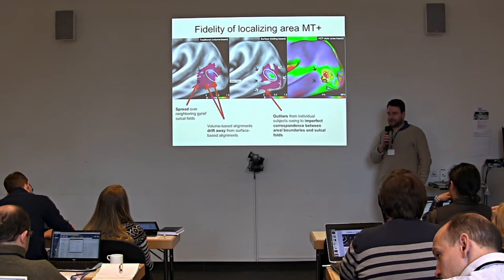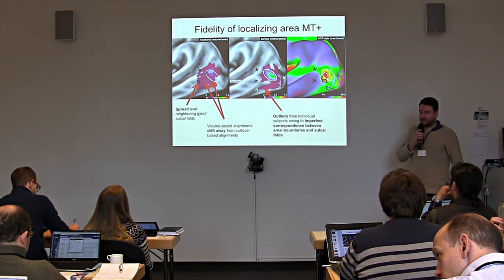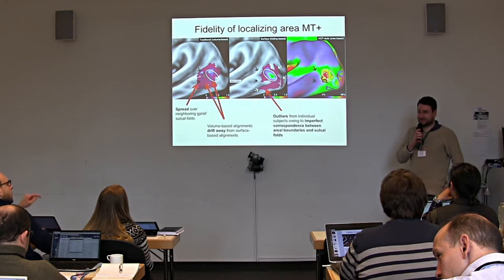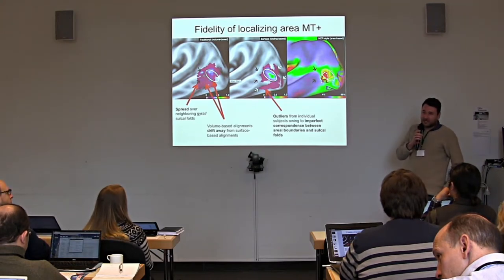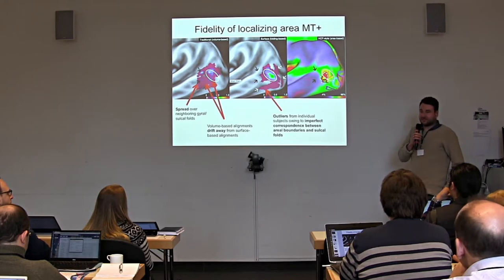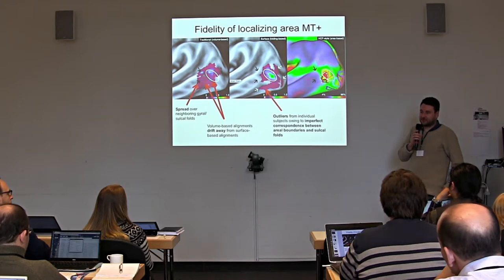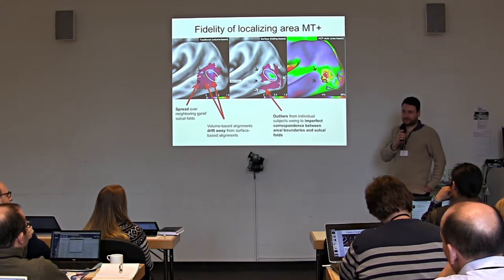MSMAll is pretty agnostic to the final set of modalities used, which is often a problem in patient studies where you have older paradigms and don't have all modalities. You can use MSMAll with different combinations of modalities. For example, if you don't have T2, you cannot compute myelin maps, which is a real drawback. But you can still run the algorithm with other sets of modalities and even self-defined properties.